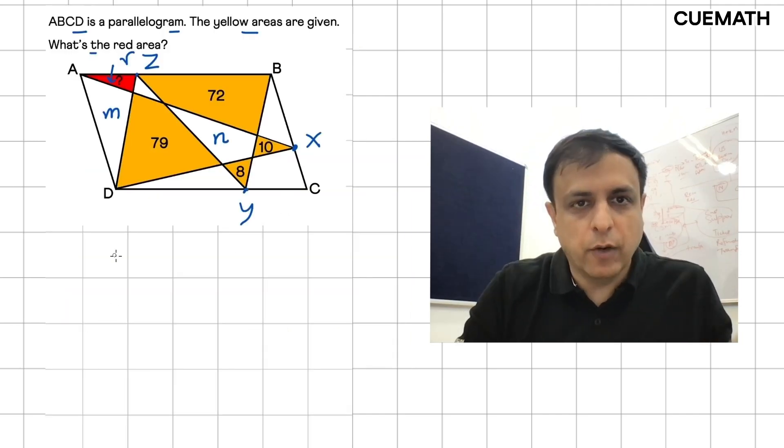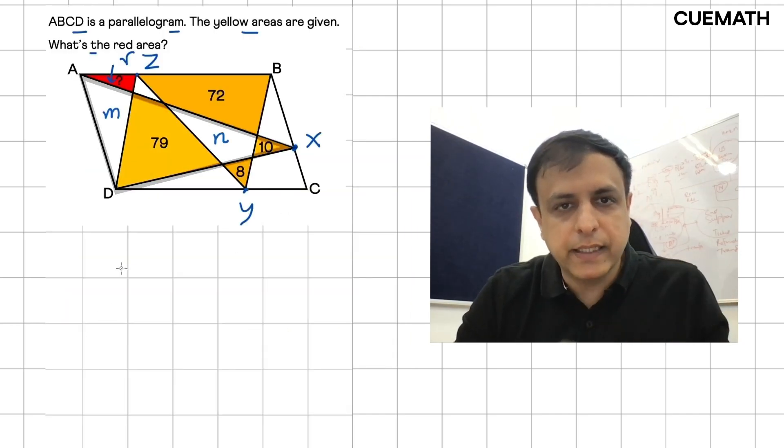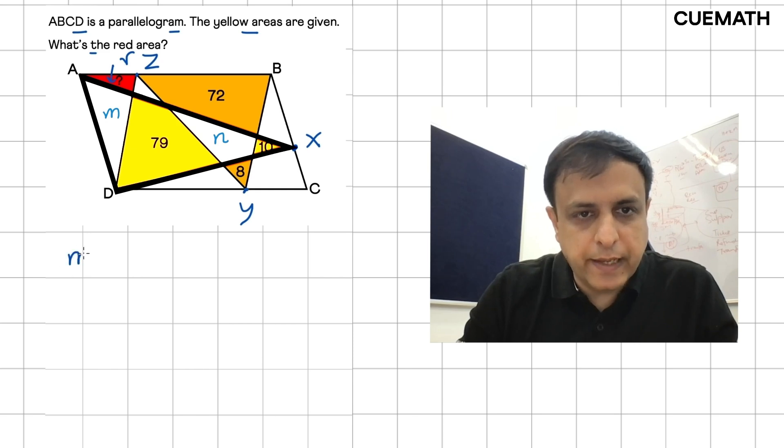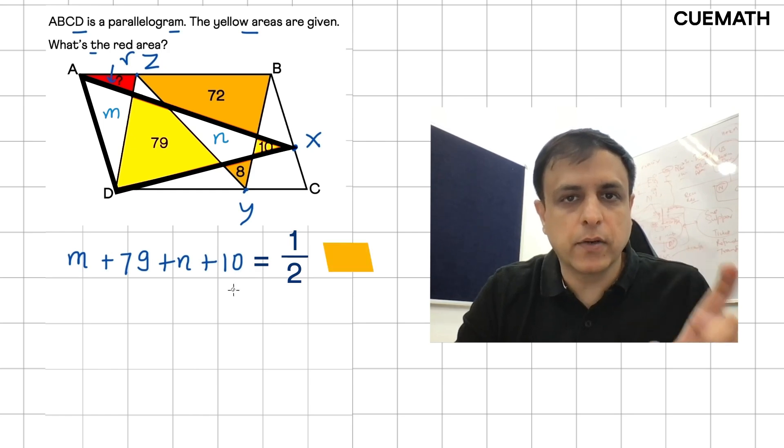And now applying this logic here, we see that the area of AXD, which is M plus 79 plus N plus 10, will be half the area of the parallelogram ABCD.